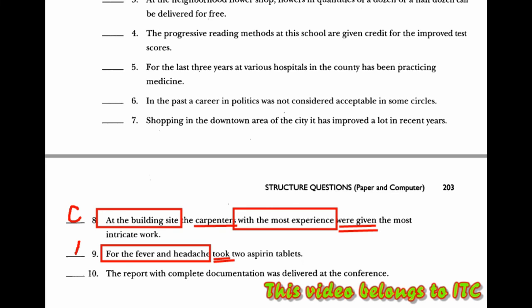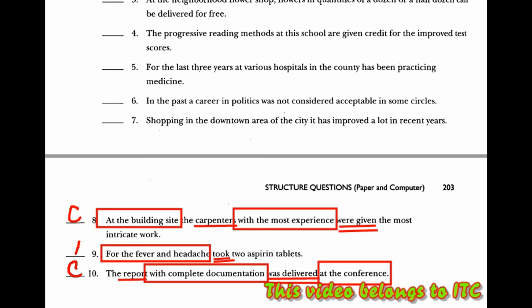Untuk nomor 10, 'the report' adalah subjek, 'was delivered' adalah predikatnya. 'With complete documentation' adalah frasa preposisi, 'at the conference' adalah juga prepositional phrase. Maka kalimat ini dapat disimpulkan sebagai benar, correct, karena dia memiliki subjek dan predikat secara lengkap.